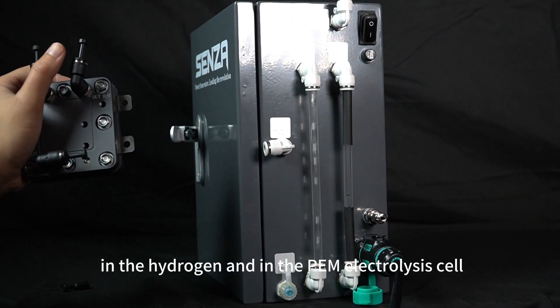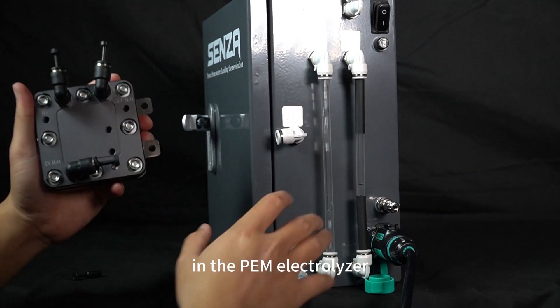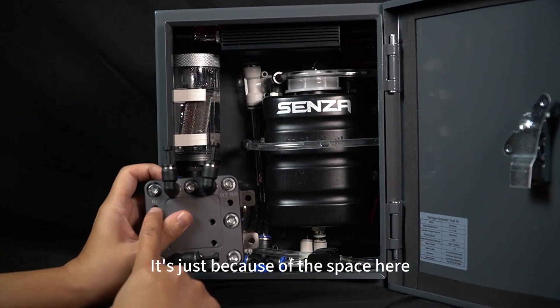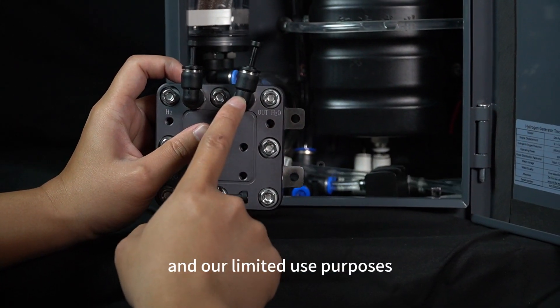In the PEM electrolyzer, hydrogen and oxygen can be separately output. It's just because of the space here and our limited use purposes.